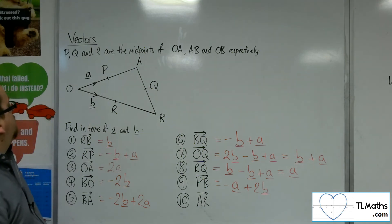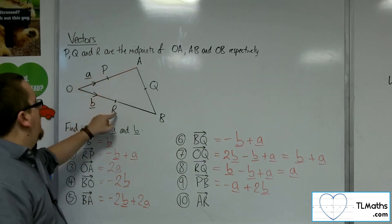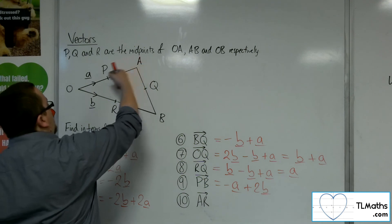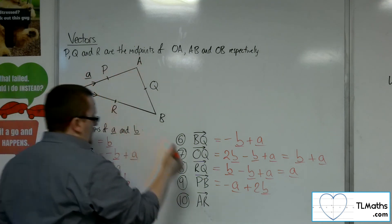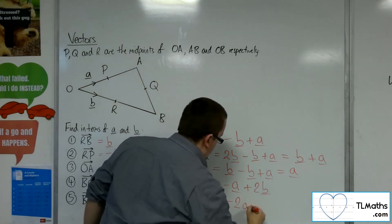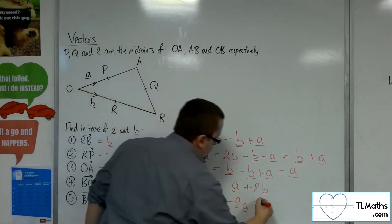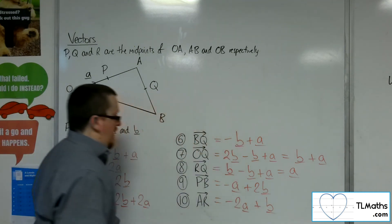A to R. So here's A. Here's R. So I can backtrack from A to O, so that's minus 2A, and then one more B, and I arrive at R.